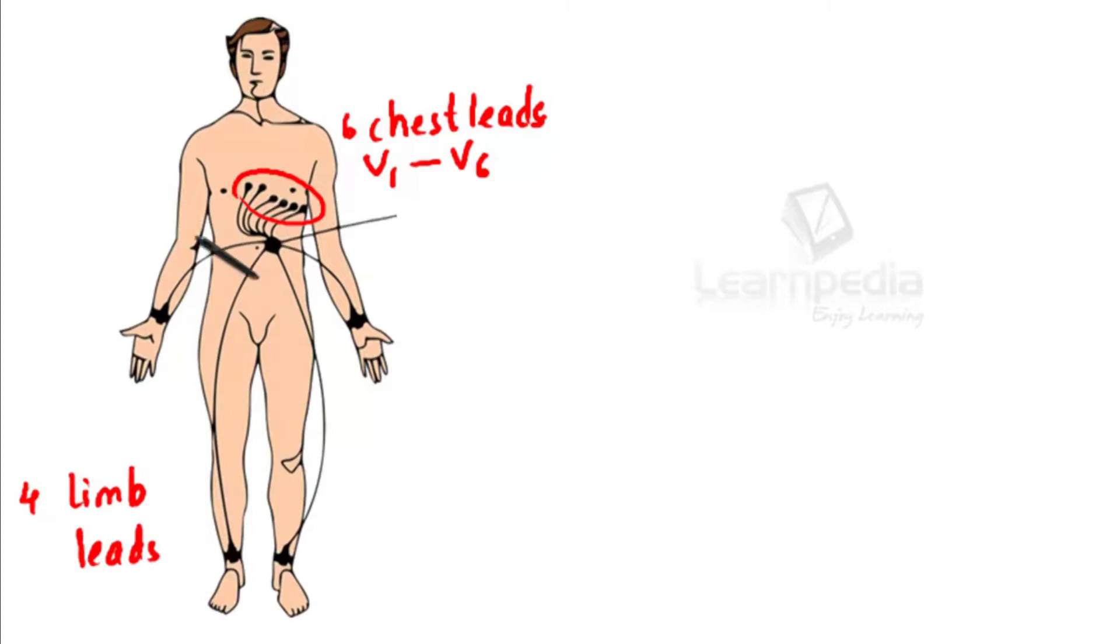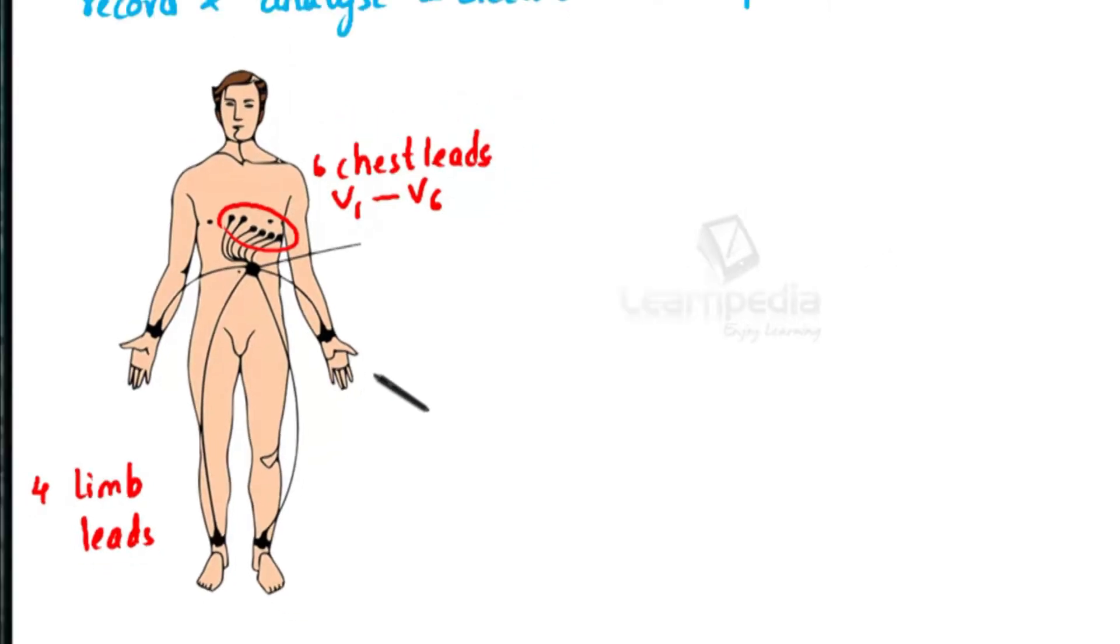So the leads that are present on the arms, they can be placed anywhere between the shoulder and the elbow. The leads on the legs, they can be placed above the ankle and just below the torso. So the ECG would produce the electrocardiograph, that is, they are waves on the graph paper.